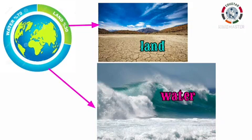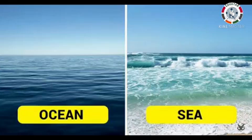The remaining one part of the Earth is land, which consists of soil and rocks. The oceans and seas are the biggest bodies of salt water.